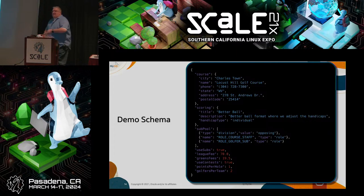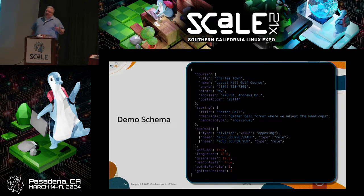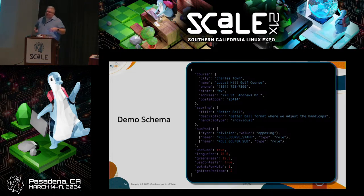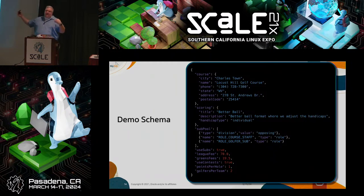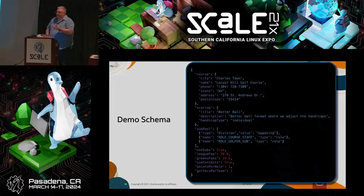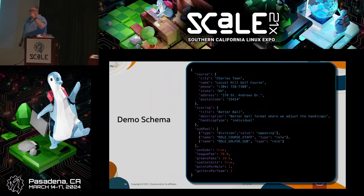Years ago I took over managing a golf league and wrote a web application to help manage it. One concept in the league is that we have seasons, and each season has a unique set of configuration options. Those configuration options have grown over the years — as I added more functionality and changed rules, I had to create new columns in the season table to accommodate them, which became kind of a pain.